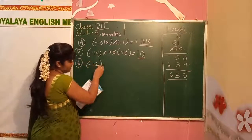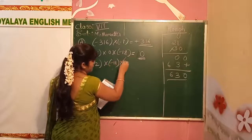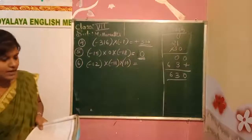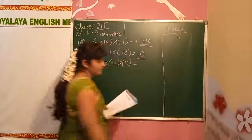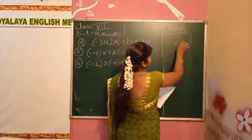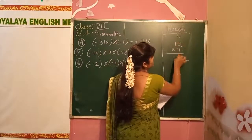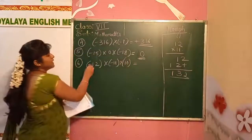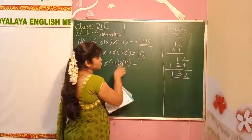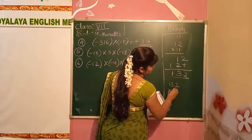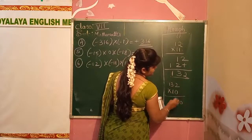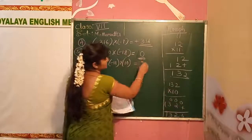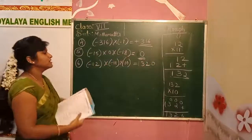Sixth question: minus 12 into minus 11 into 10. Multiply 12 into 11 first: 1 twos are 2, 1 ones are 1, 1 twos are 2, 1 ones give us 132. Minus into minus gives plus, so 132 into 10. 132 into 10 gives 1320. Since we had 2 minus signs, the answer is positive 1320.